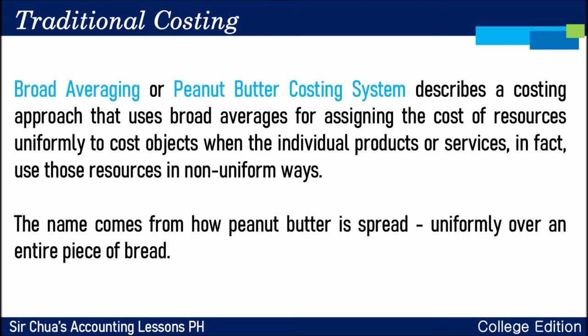It's called peanut butter costing because just as we spread peanut butter over an entire piece of bread, overhead is also applied to production uniformly. However, the resources and the production process itself are used non-uniformly — the level of service department costs allocated and the number of machine hours used vary per production process. So sometimes traditional costing can be misleading — we are costing products uniformly when in reality, the use of overhead activities is not the same, especially when a company has multiple product lines.